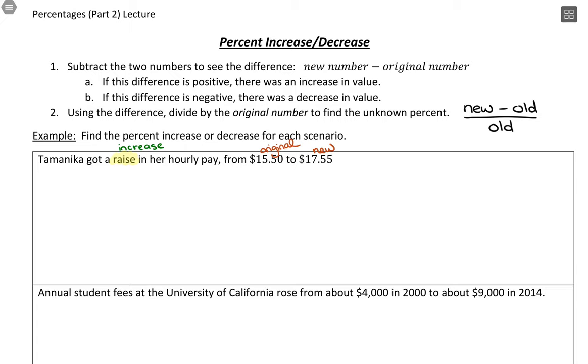If you just wanted to see the difference, then what we could do is take the new value, $17.55 minus the old value of $15.50, and that would just be a $2.05. So we could say that there was a $2.05 increase in pay, but that's not the question here. What we want is the percent increase.